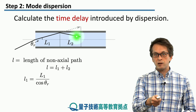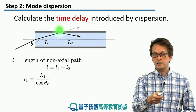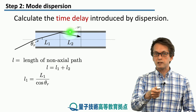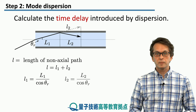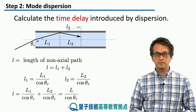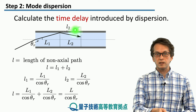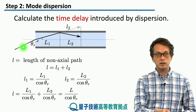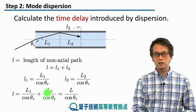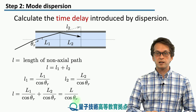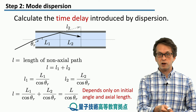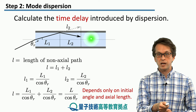We can use a neat trick and reflect the arrow describing distance L2 to extend the path. Then l2 is given by capital L2 divided by cosine of the refraction angle theta r. Summing them together, the total path length small l equals capital L over cosine of theta r. So the path length of the light ray depends only on the initial angle theta r and the axial length capital L.